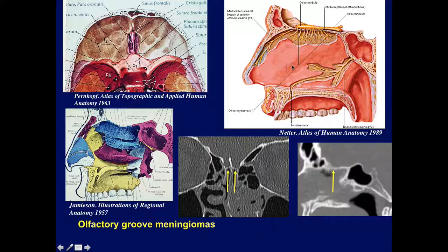On the sagittal anatomic diagram, in blue we see the ethmoid bone and the region of the cribriform plate. The crista galli is only partially seen here. Progressing posteriorly, this is the planum sphenoidale, part of the sphenoid bone. And this is the region of the tuberculum sellae that forms the superior anterior margin of the pituitary fossa.